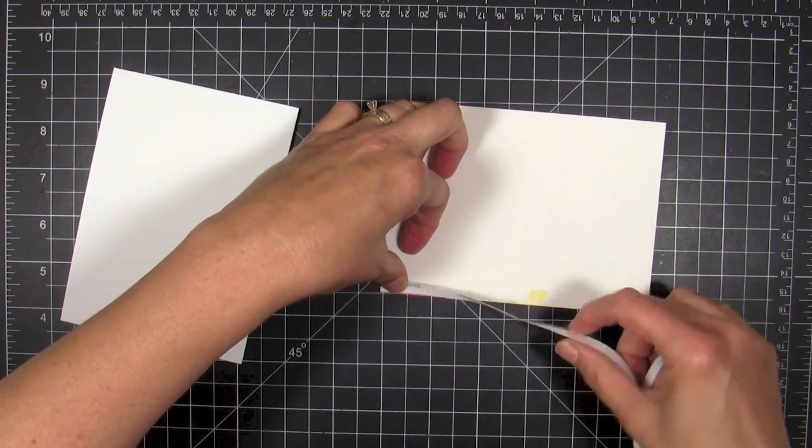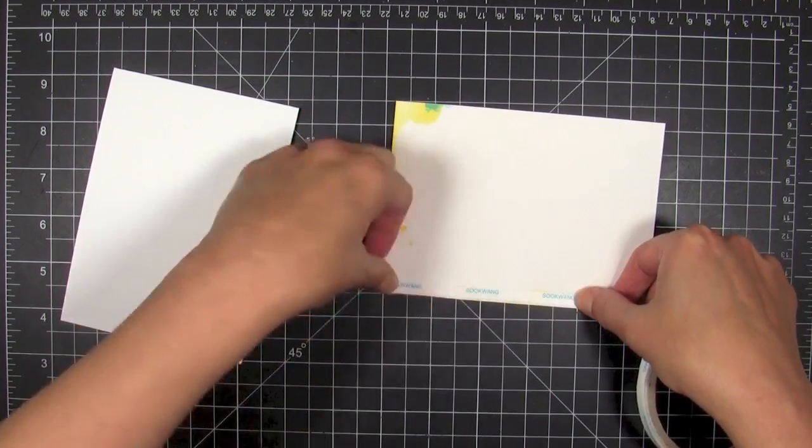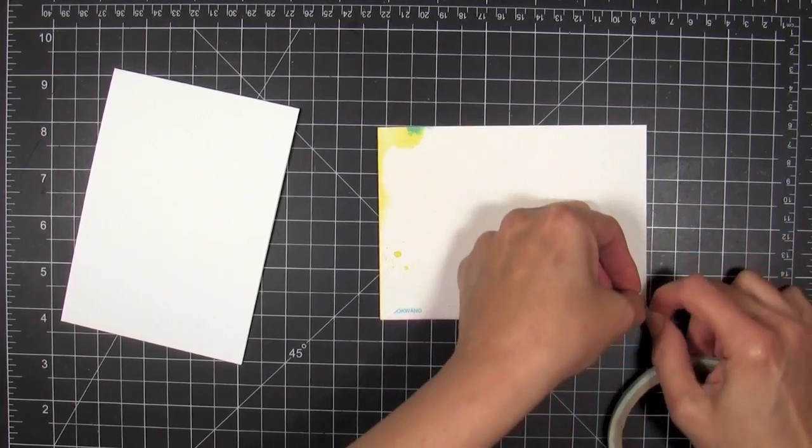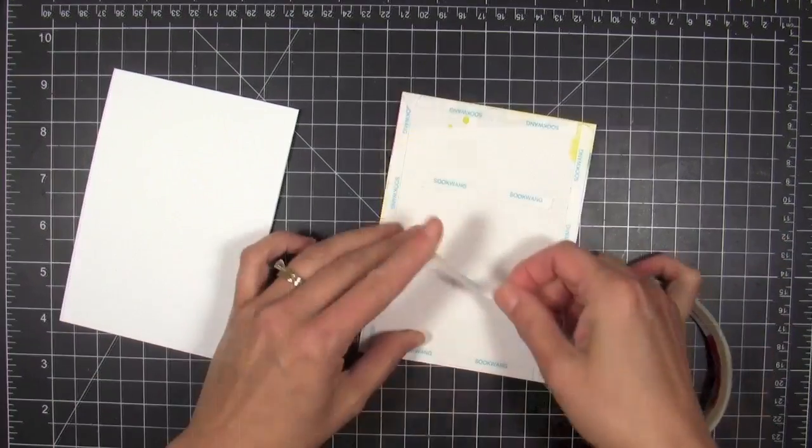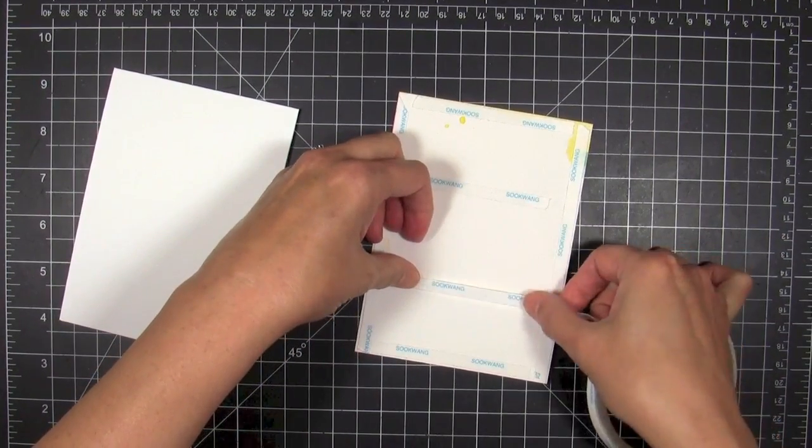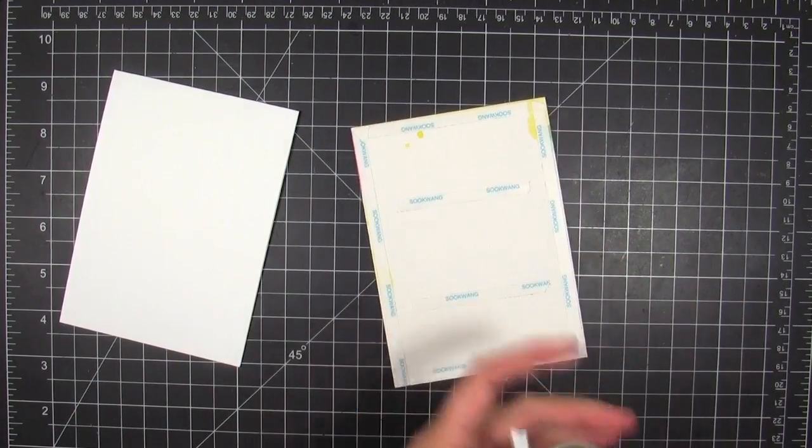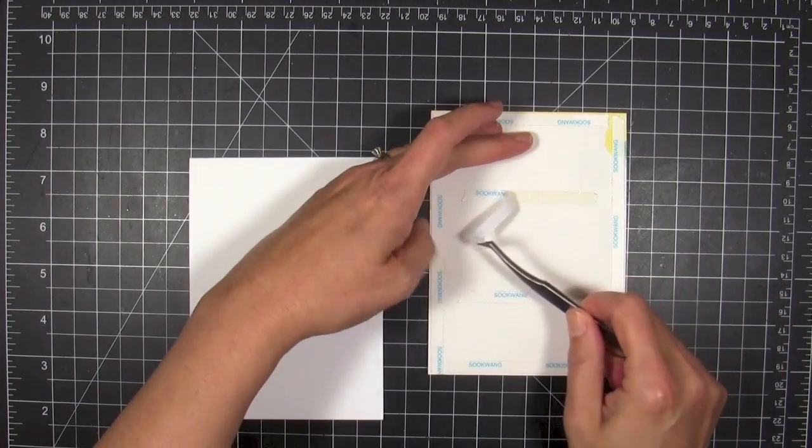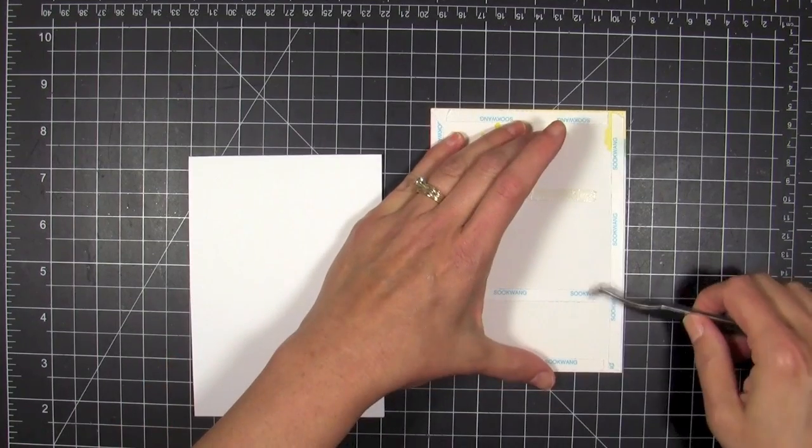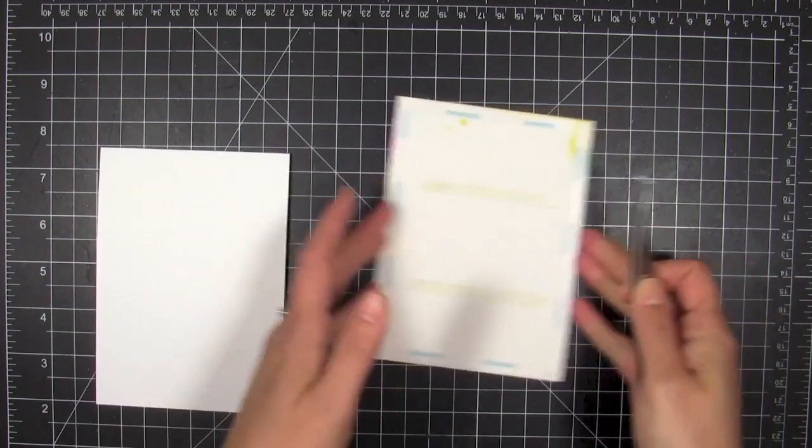My project still has some warping because I didn't want to take the time to set it under a heavy book overnight. I'm going to use some Be Creative tape all around the outer edges and put a couple pieces across the middle. This will make sure it's cemented to my base card and won't lift up and pucker.